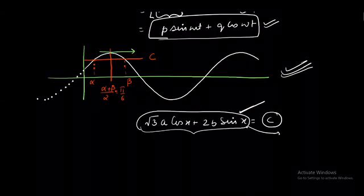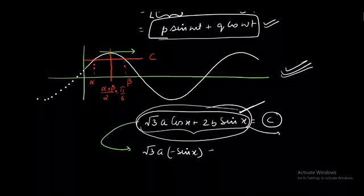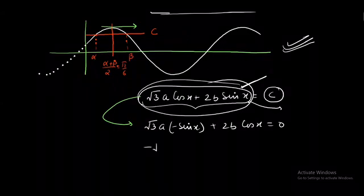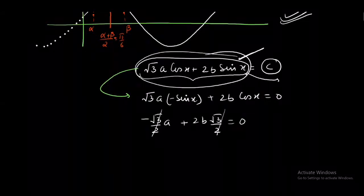Now, since we are getting maxima at the point (α+β)/2, that is why I am going to say that for this expression, the derivative is going to become 0 when x is π/6. So let us proceed and equate the derivative to 0. I am going to differentiate it. This expression will have derivative 0 when x is π/6. Differentiating it, √3a(-sin x) + 2b cos x. Keeping x equal to π/6 gives me -√3/2 a + 2b √3/2 = 0. √3/2 can be merged with 0 on the right-hand side, solving it for b/a. So the value of b/a turns out to be 1/2, that is 0.5. Wow, great.